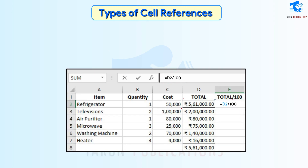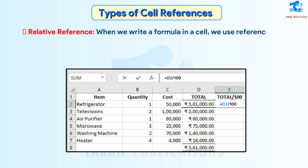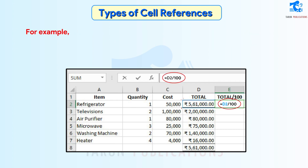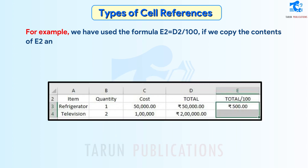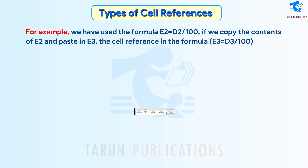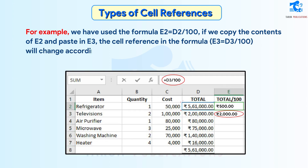Types of Cell References. Relative Reference: When we write a formula in a cell, we use reference of other cells or ranges to get an output in that cell. For example, we have used the formula E2 = D2/100. If we copy the contents of E2 and paste in E3, the cell reference in the formula E3 = D3/100 will change accordingly and a different output will be displayed.